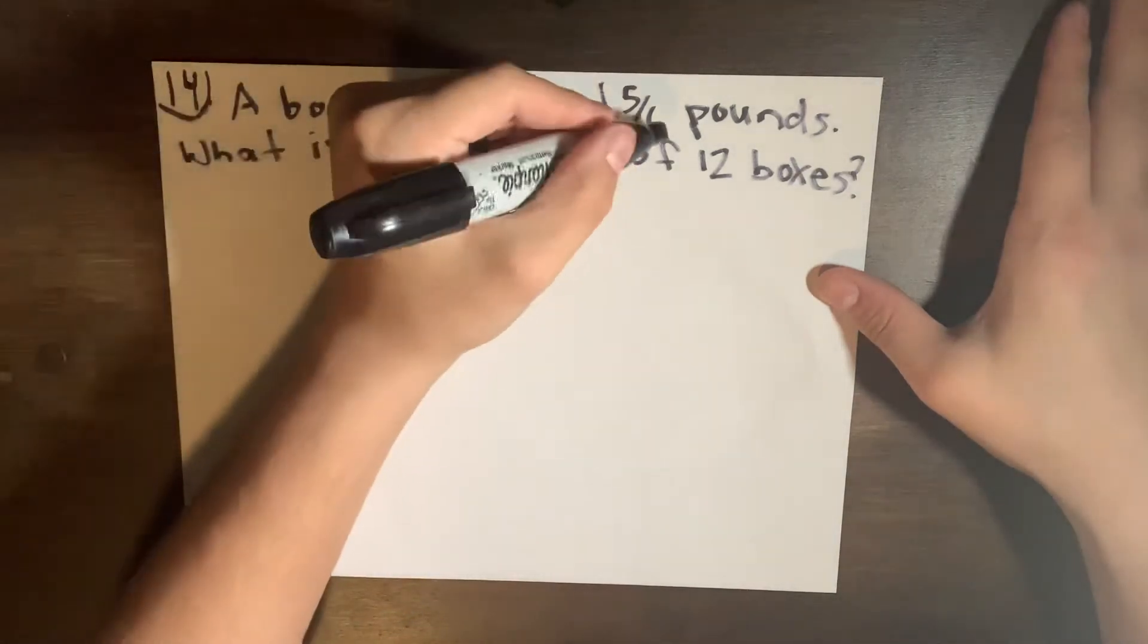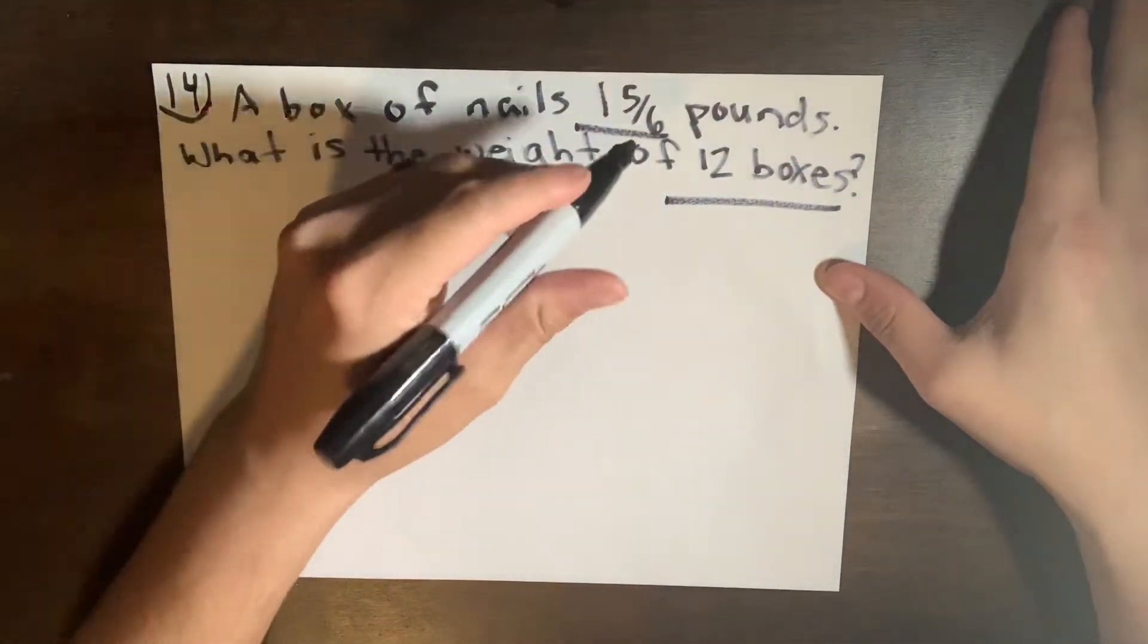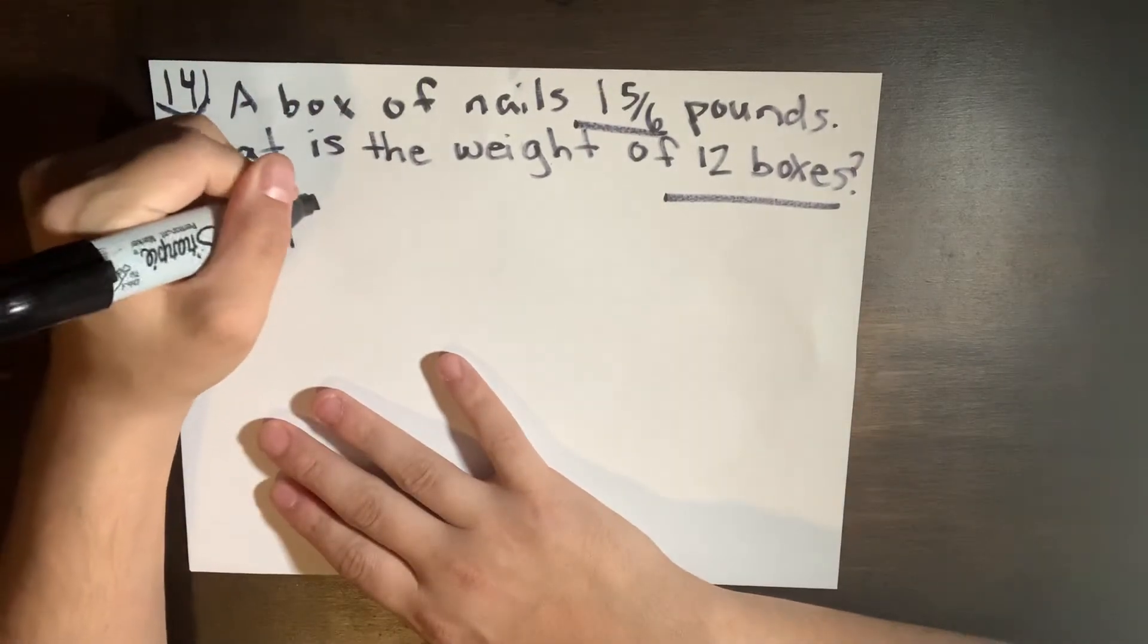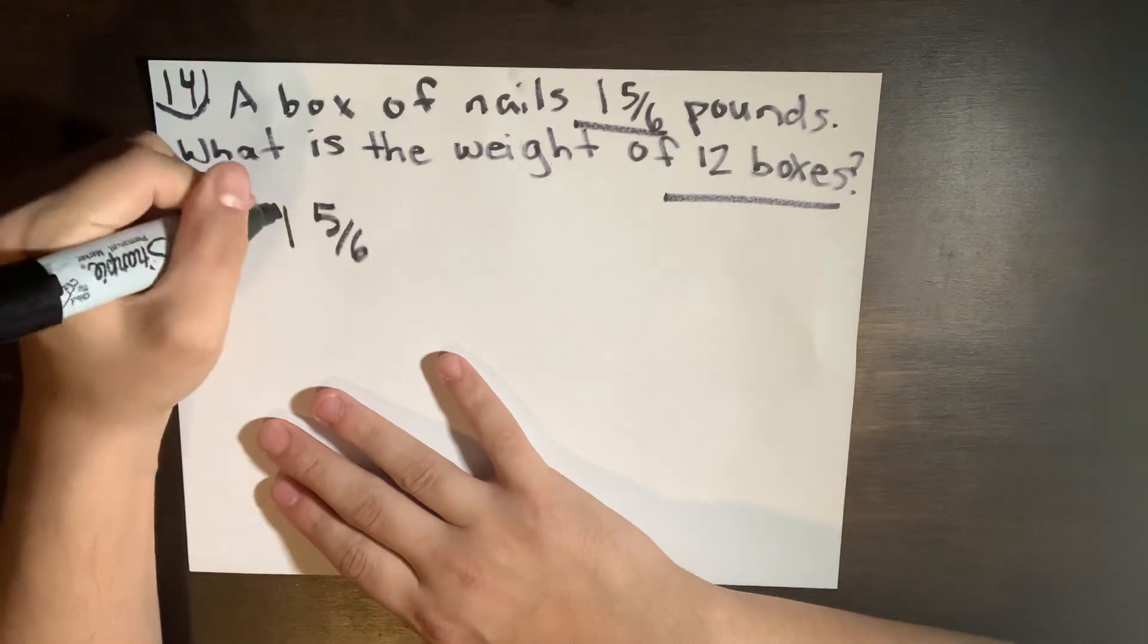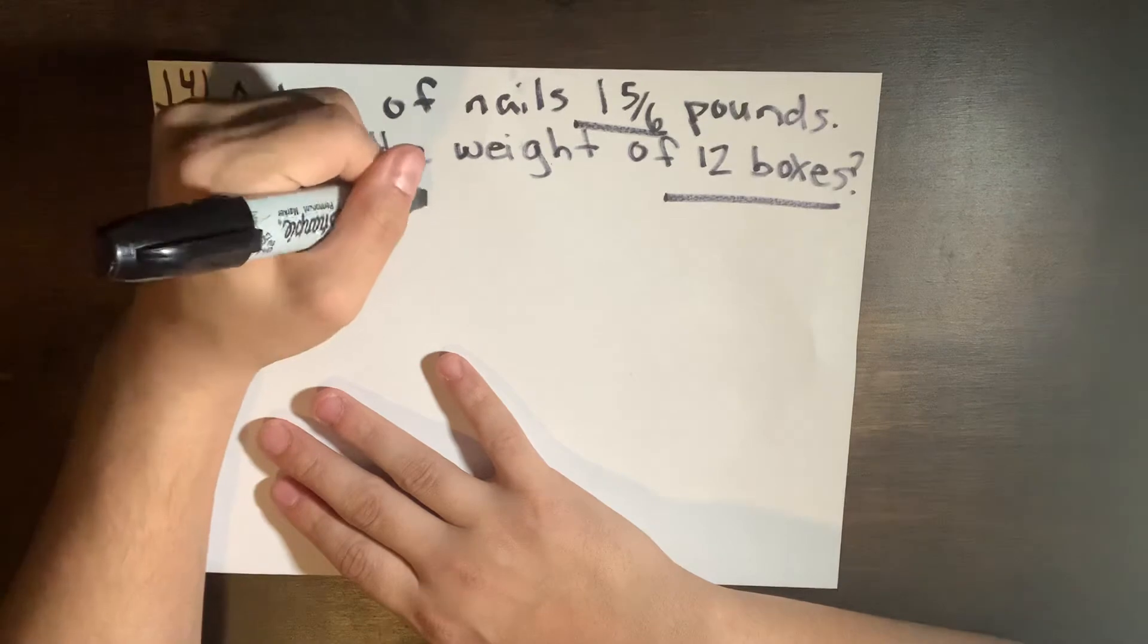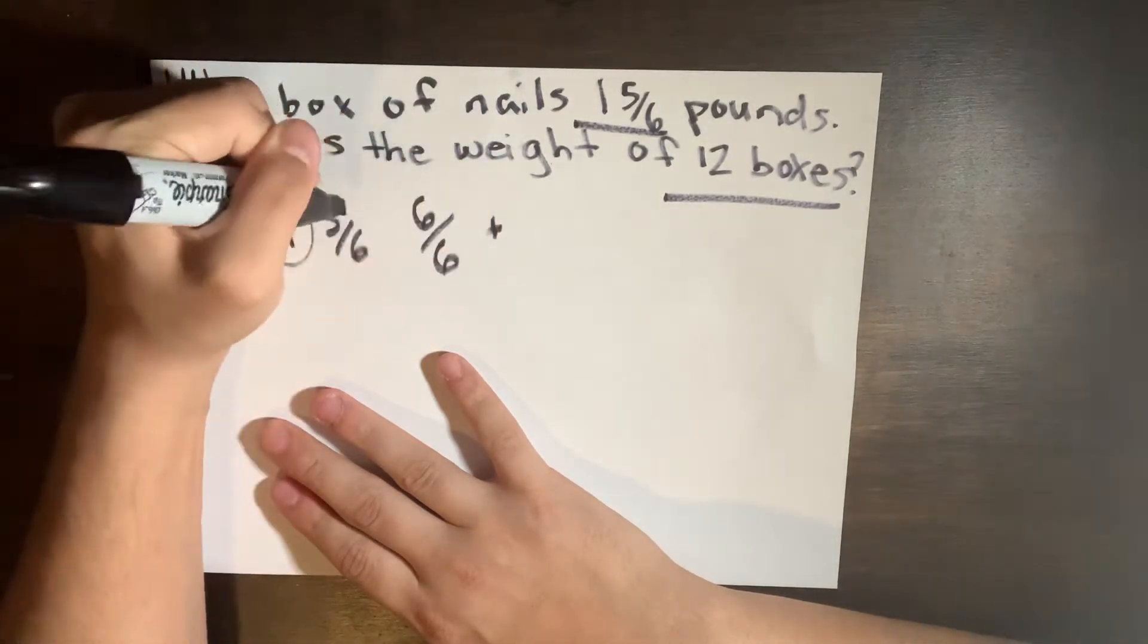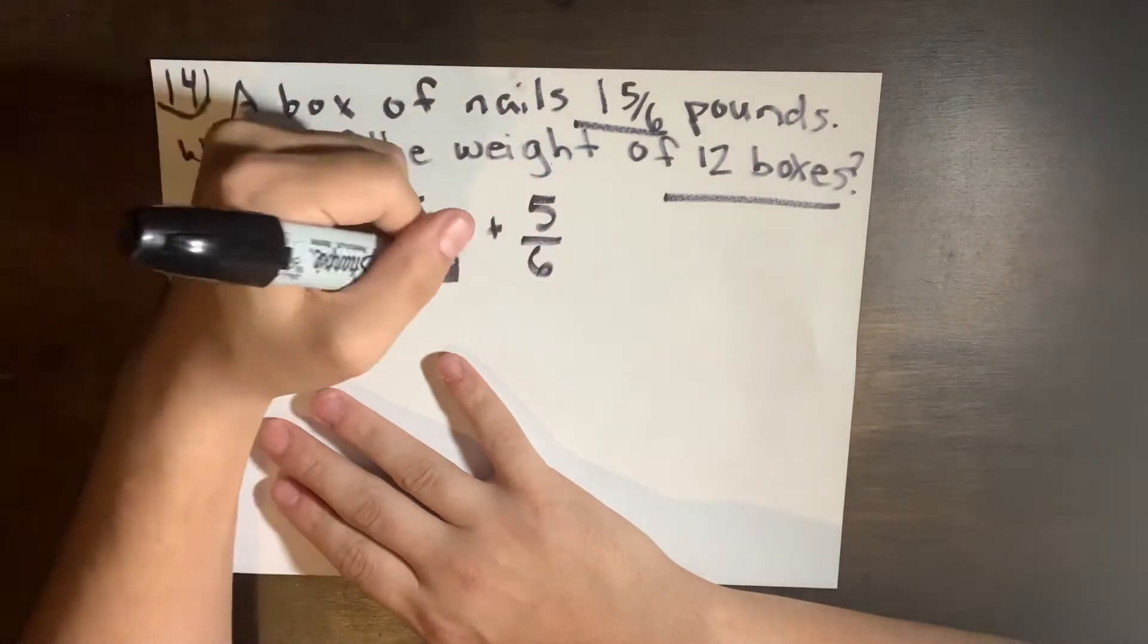Let's focus on the numbers: 1 5/6 and 12 boxes. First we're going to take this fraction 1 5/6 and make it a total fraction. To make that simpler, we're going to take this one and turn it into its actual fraction, so one would be the equivalent of 6/6.